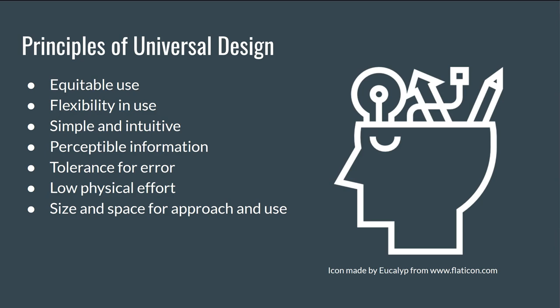Remember those seven principles from earlier? Though they kind of look like one, they're not a checklist. Disability studies scholar Jay Dolmage recommends seeing them as a way to orient yourself when designing your instruction. Is this activity simple and intuitive? Can a student make a mistake at the beginning of this tutorial that will make it impossible to complete? Does this require physical effort of students? Is there only one way for students to learn this content? Is there a LibGuide or an asynchronous way they can view the content if they are unable to attend a class session?